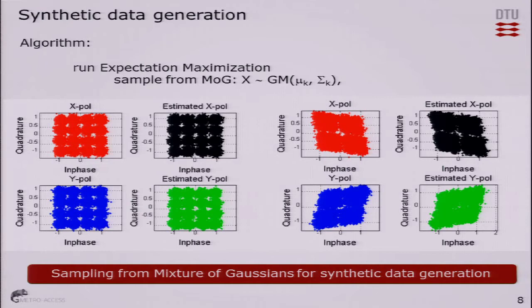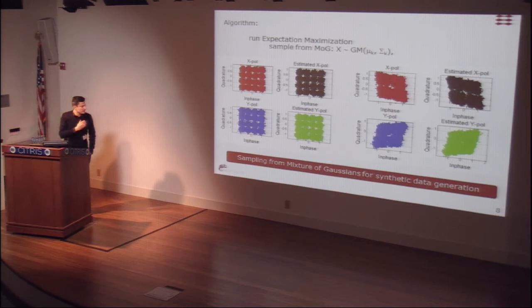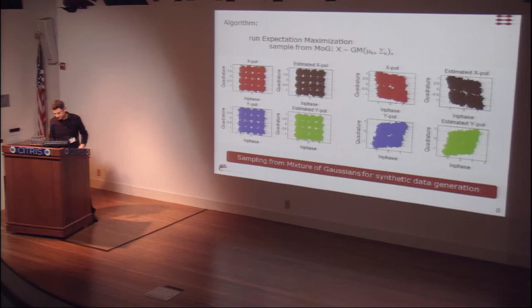This can also be used for estimating the impact of impairments. In the figure to the right, for example, we have a tilted constellation with impairments from the transmitter like an IQ modulator. Again, we run the system, learn from the observed data about the system, learn the parameters, and then sample from the distribution to regenerate the data. There is a very good correspondence between, for example, the x polarization and the estimated x polarization. By sampling from the mixture of Gaussians we can generate synthetic data which has impairments.